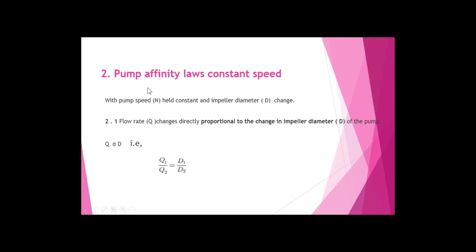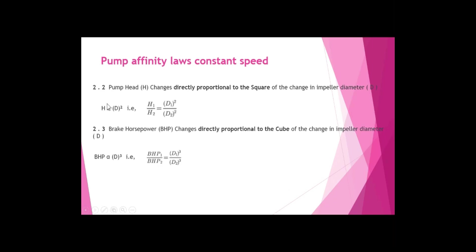Pump affinity laws when constant speed: here we hold speed constant and the impeller diameter is going to change. This law helps us determine the flow rate, pump head, and brake horsepower due to changes in the impeller diameter. For relationship 2.1: flow rate Q changes directly proportional to the change in impeller diameter D of the pump, so Q1/Q2 = D1/D2.